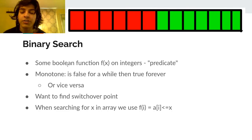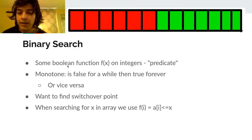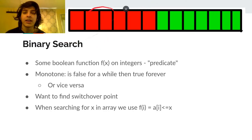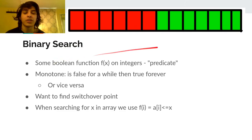This function needs a specific property called monotonicity. When I say a function is monotone here, it means that it starts out always false, and then at some point it switches over to true and becomes true forever. Red means false in the picture. You can also have the opposite, where it's always true and then switches over and becomes always false forever.